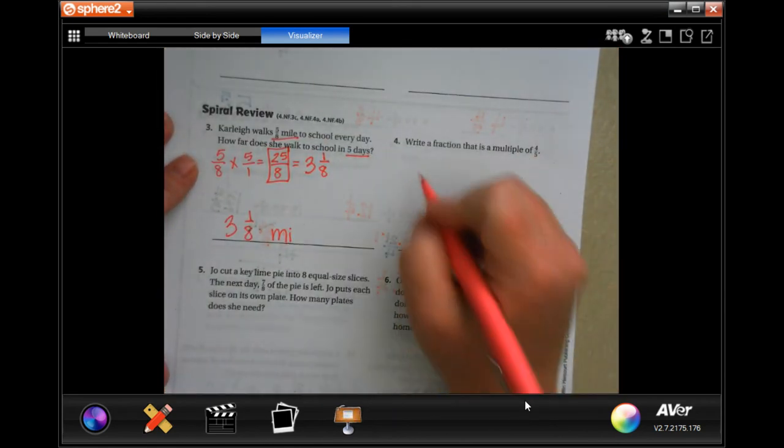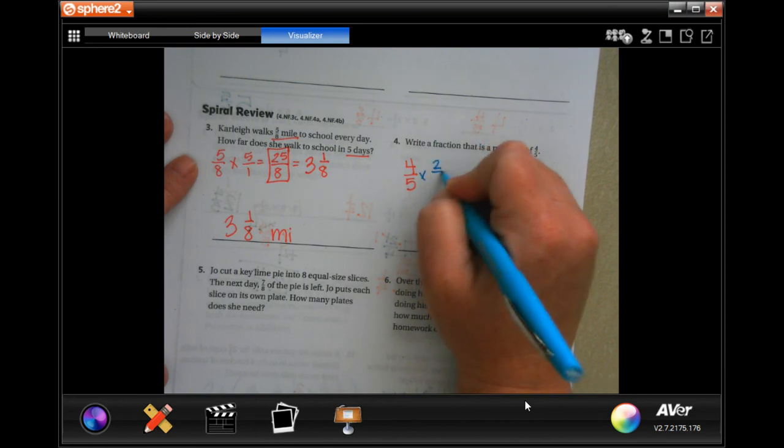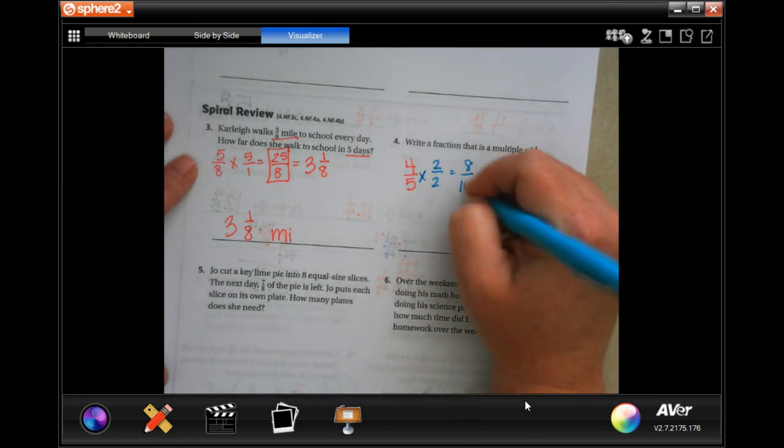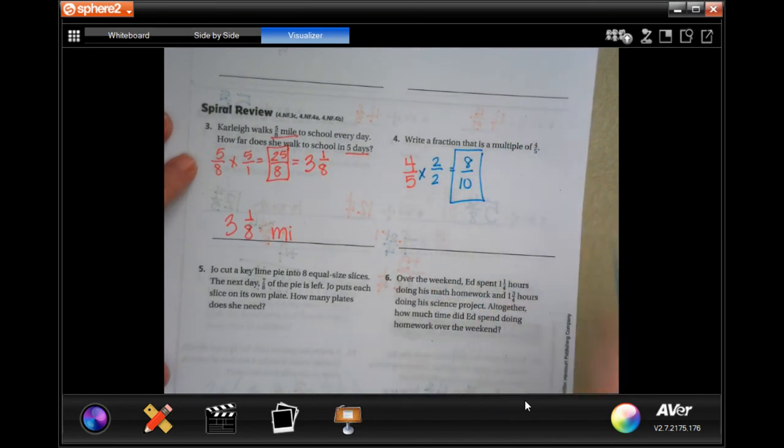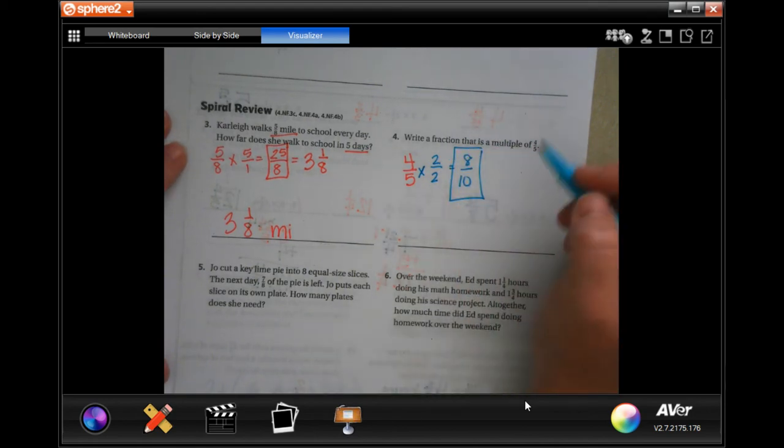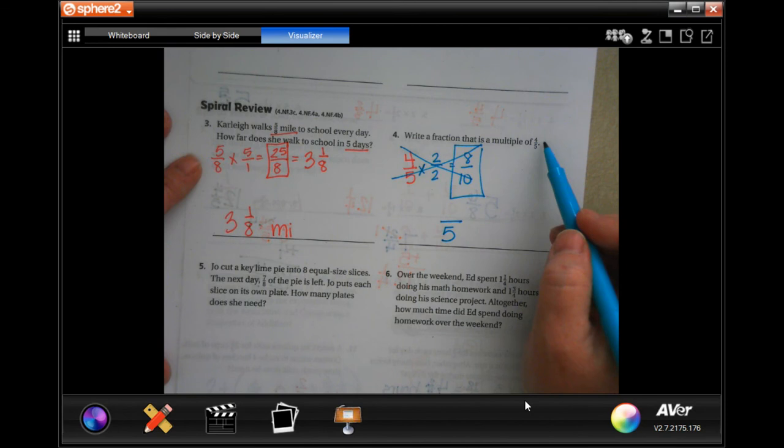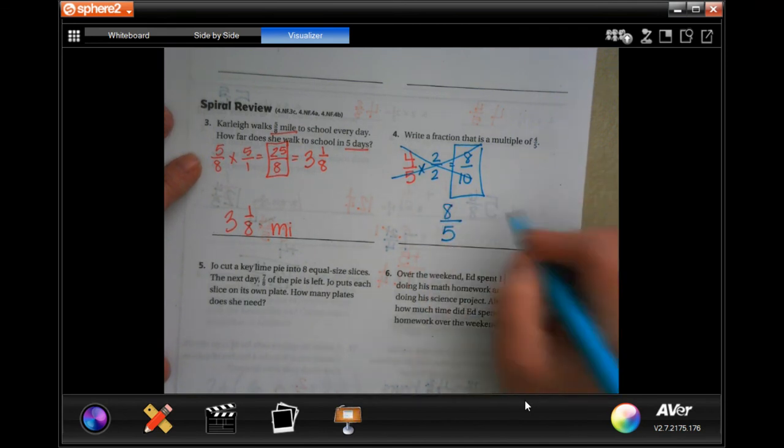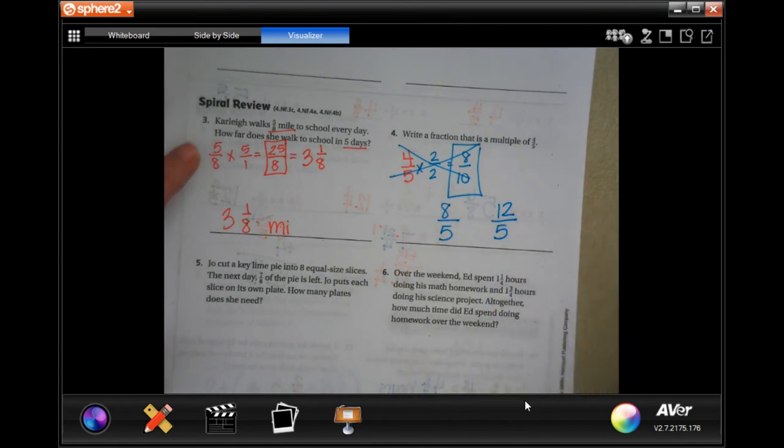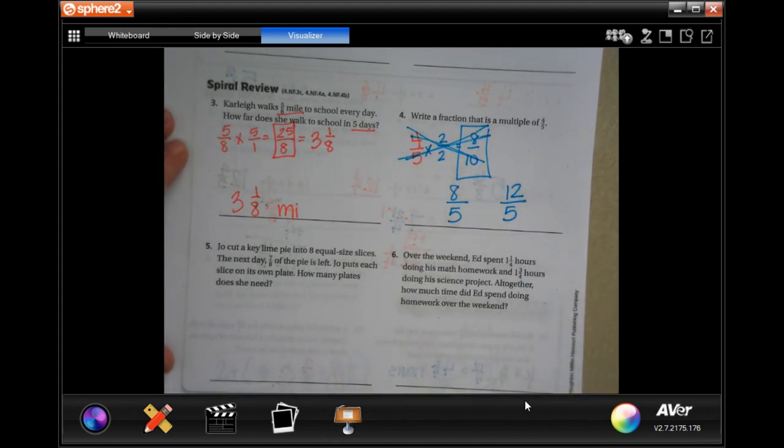What is a fraction that's a multiple of 4 fifths? Well, I would just multiply the top and bottom by 2. So, then I get 8 over 10. That's a multiple of 4 fifths. So, it's actually giving us, guys, it actually wants for us to, so next, guys, sorry, it actually wants us to keep the denominator of 5. So, then we just have to multiply 4 by a number. So, we could use 8, we could use 12, we could use 16, any number that's a multiple of 4. So, it wants us to keep the bottom number of 5. So, sorry about that. Don't use this one.